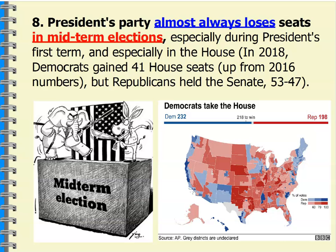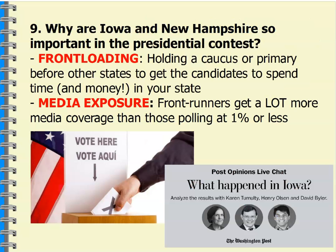In 2018, we saw Democrats gain 41 seats in the House — up from 2016 — though Republicans held on to the Senate. We have seen those House seats change in midterm elections, and the president's party usually does lose, which has been the case for the last four presidents.